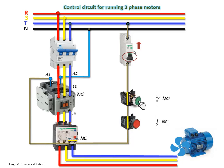The electric current will start to pass in the circuit. Since the contact points 95 and 96 of the overload are also closed, the current will continue to pass through them and into the magnetic contactor coil, causing the contactor to become magnetized and attracted inward. The main connection points of the power circuit come into contact with each other, and the auxiliary contacts 13 and 14 also change to normally closed.